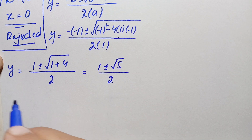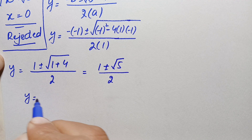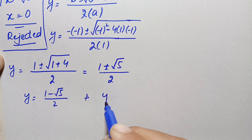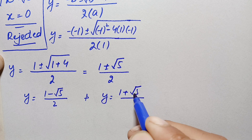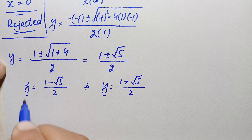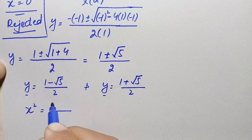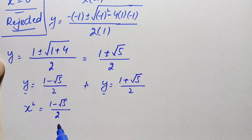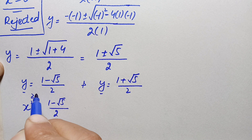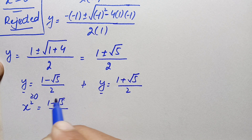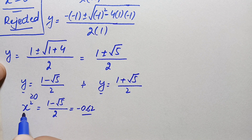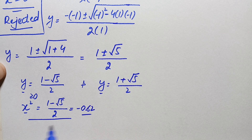We have two possible values of y: y = (1 − √5)/2 and y = (1 + √5)/2. Replacing y with x², the first gives x² = (1 − √5)/2. However, for any real x, x² is always ≥ 0, and this value is approximately −0.62, which is negative. Therefore, x² cannot equal a negative number, and we reject this solution.